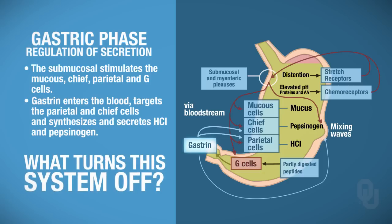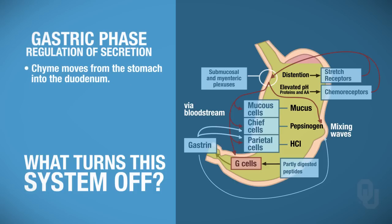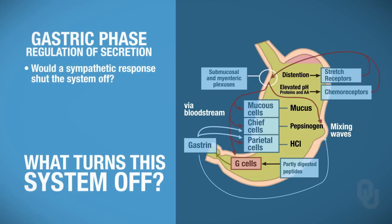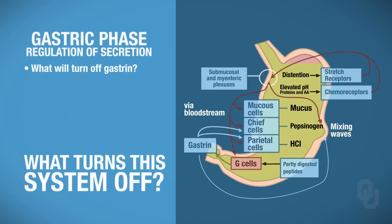What turns off the gastric phase? The chyme won't stay forever in the stomach — it's going to move into the duodenum. When the chyme moves into the duodenum, there's going to be some distension of the duodenum, which can help trigger and shut this system off. A sympathetic response would also shut the system down. Specifically, acidity in the lumen of the stomach — if the lumen is acidic — will inhibit gastrin.